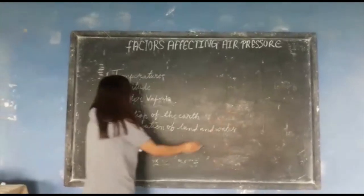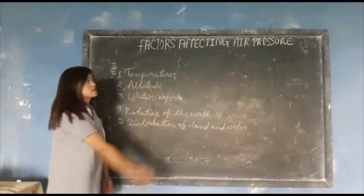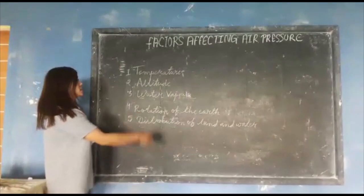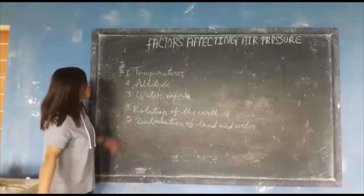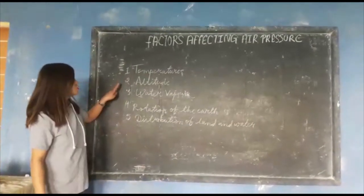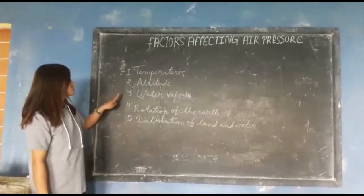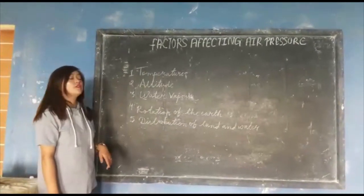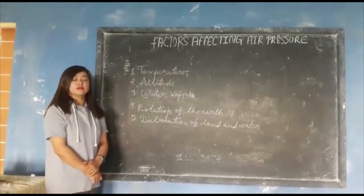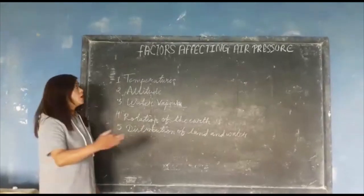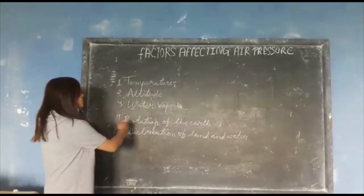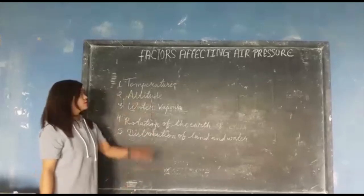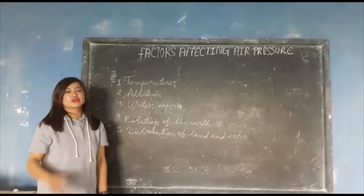So these are the factors which affect air pressure: temperature, altitude, water vapor, rotation of the earth, and distribution of land and water. Now I am explaining about all these factors. The first one is temperature.